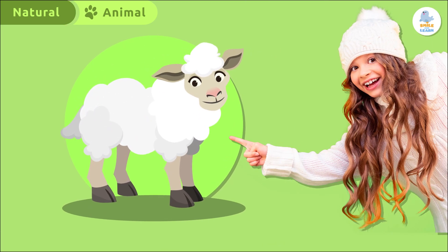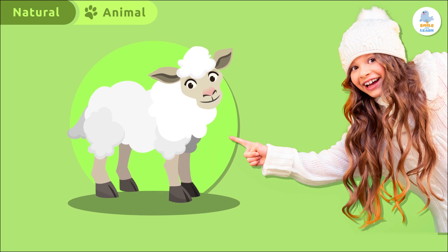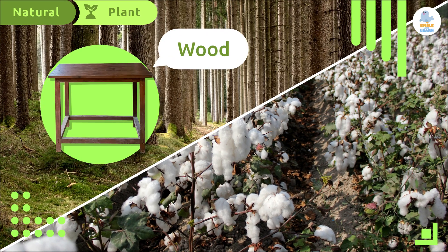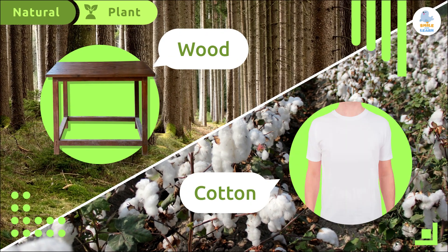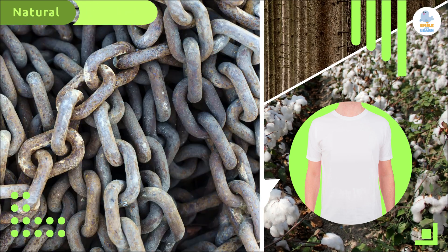Natural materials can also be of plant origin, like the wood of this table or the cotton of this t-shirt. This means that they come from plants.